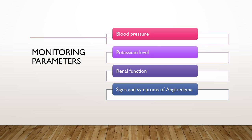Monitor blood pressure regularly. We also need to monitor renal profiles and CBC frequently, as well as potassium levels along with other electrolyte levels, and watch for any signs and symptoms of angioedema.